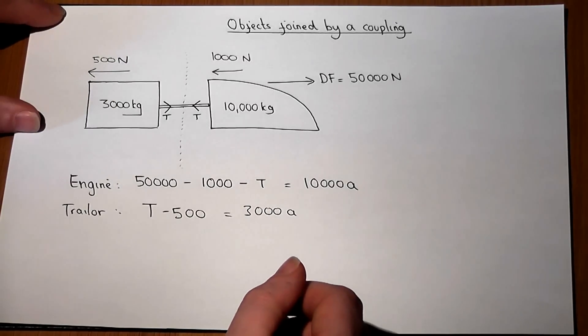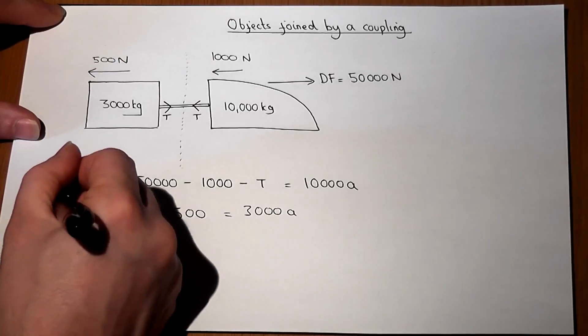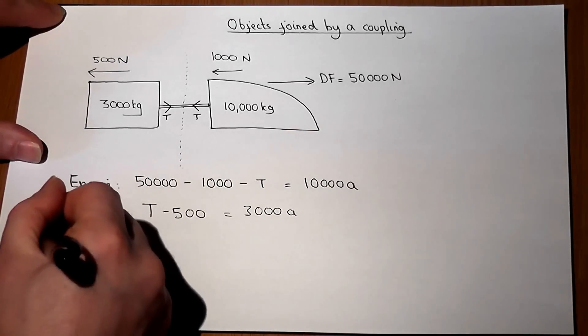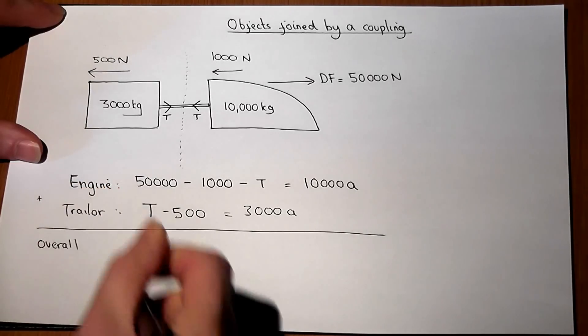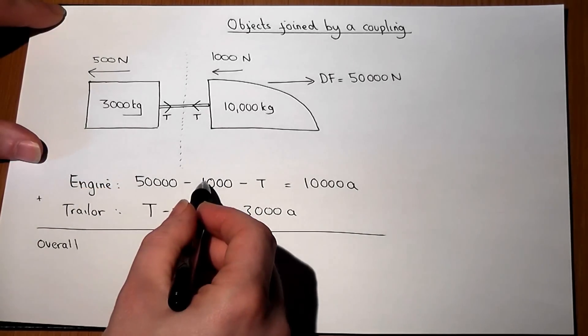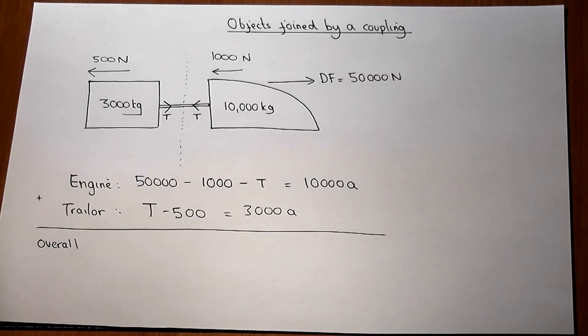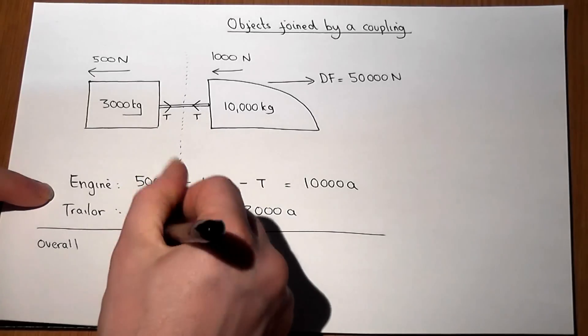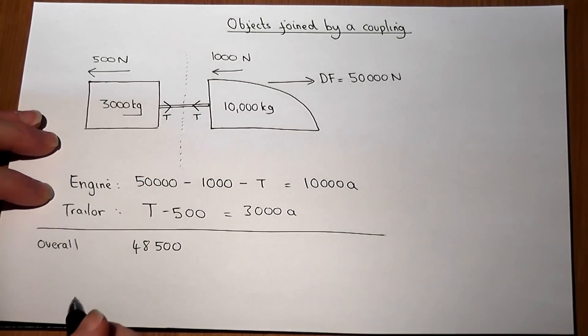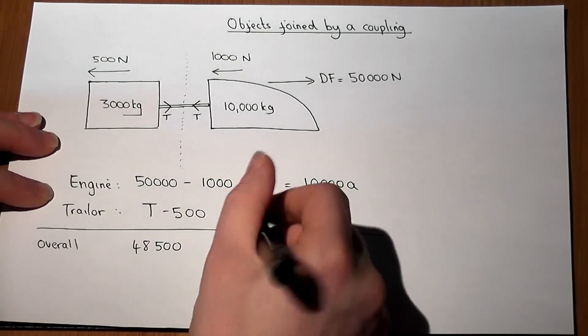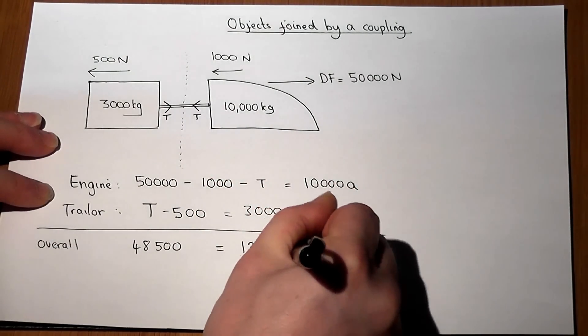Now from this I can generate an overall equation of motion. If I add these two equations together, we have 50,000 minus 1,000 minus 500, so that gives us an overall driving force minus resistance force of 48,500. And the two T's cancel out. So this will equal these two together which is 13,000 A.